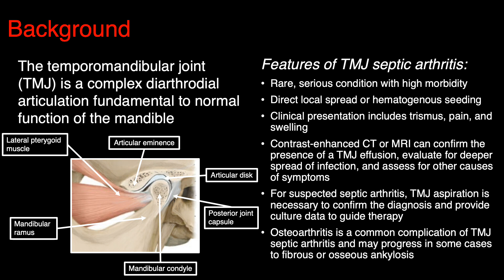The TMJ is a complex joint. Normal function is critical for mastication and speech. The range of motion is both a hinge and an anterior to posterior gliding motion. Infection of the joint — TMJ septic arthritis — is quite rare but can be very serious with high morbidity; specifically, progression to secondary osteoarthritis is common, even with appropriate treatment. Infection can result from direct spread if there's been recent instrumentation or surgery, or from hematogenous seeding, particularly in the presence of risk factors, which we'll discuss along with our patient cohort.